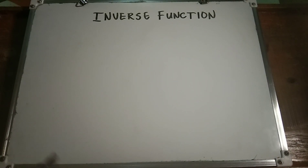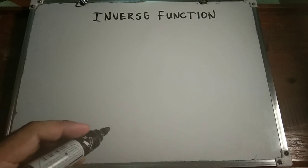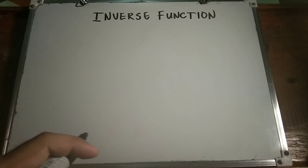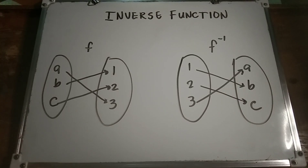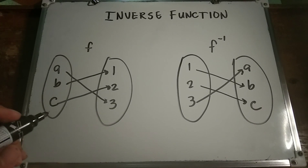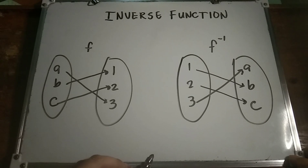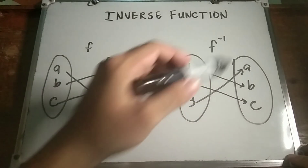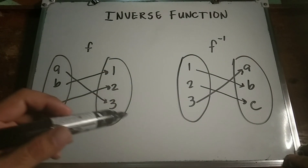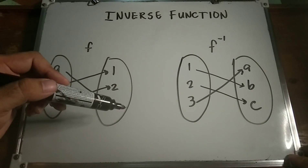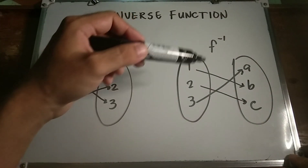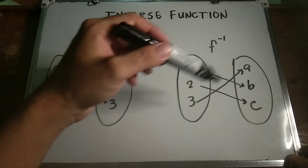What is an inverse function? In mathematics, an inverse function is a function that reverses another function. As an example, consider the function f and its inverse f⁻¹. f⁻¹ is the inverse of f, because function f maps a to 3, and in the inverse of function f, we have 3 back to a.